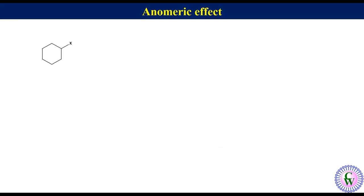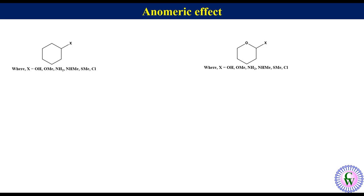To understand this effect, let's have a monosubstituted cyclohexane and a monosubstituted tetrahydropyrone ring with the substituent at the ring carbon adjacent to the ring oxygen, where X has an electronegative atom which is the point of attachment with the six-membered ring. X can be hydroxy or alkoxy,